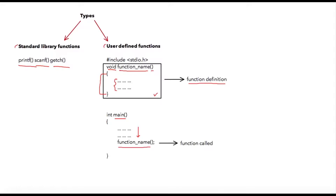You can call your defined function like this. For calling a function you just need to write the function name and parentheses, and after that you just need to add a semicolon. In the next lecture we will take an example of a user-defined function and we will also check how parameters can be passed to a function.